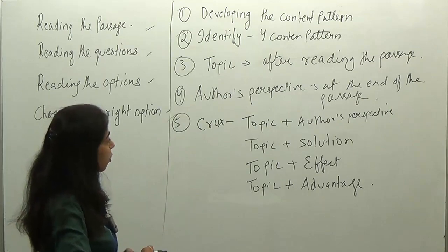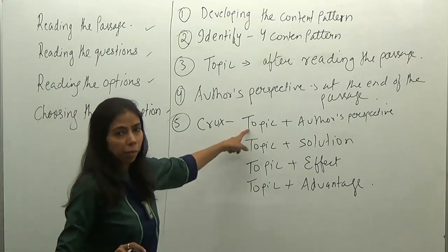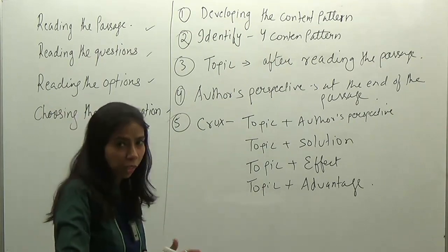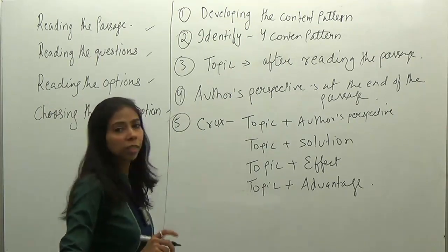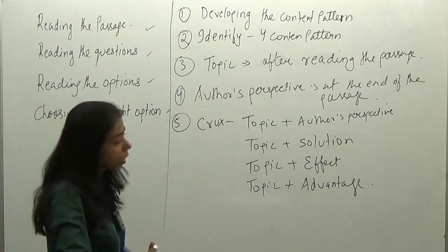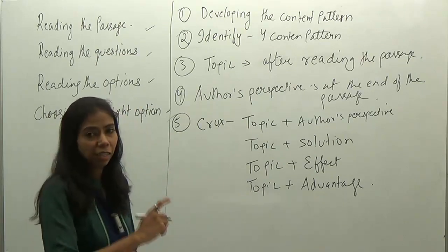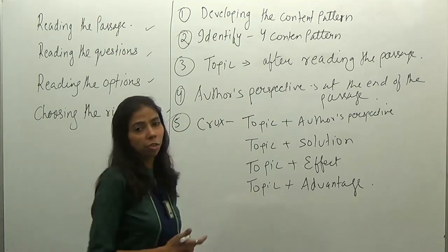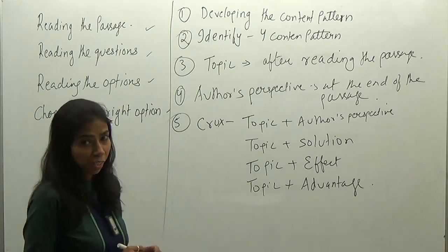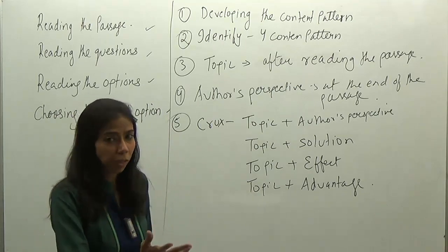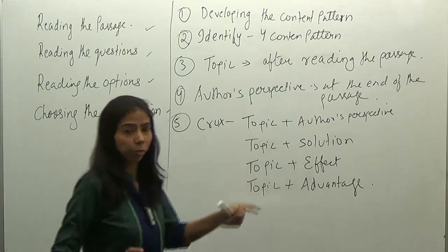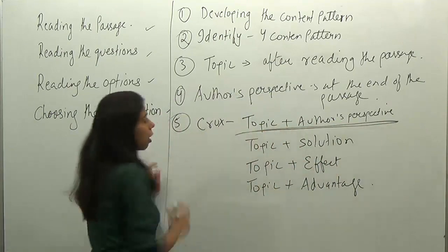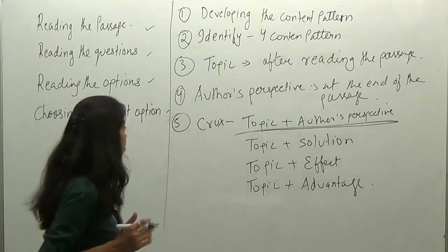The weightage should be given first to topic plus author's perspective. If author's perspective is not mentioned, then topic plus solution. If that is also not mentioned, then topic plus effect. In descriptive content, the crux should be topic plus advantage — and even there, if author's perspective is given, preference should go to author's perspective. So the first preference should always be given to author's perspective.